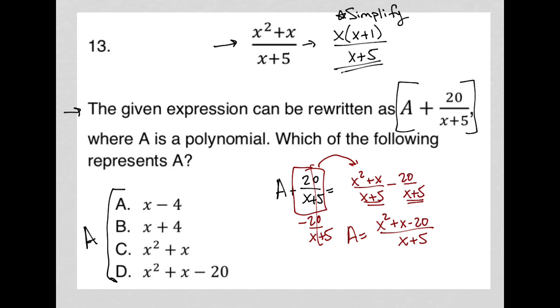Let's see what happens when I simplify the numerator here. Two factors of negative 20 that add up to positive 1 would be 5 and negative 4. So this becomes x plus 5, x minus 4 when I factor the trinomial, all over x plus 5. My x plus 5s would then cross out, and I'd just be left with A is equal to x minus 4.